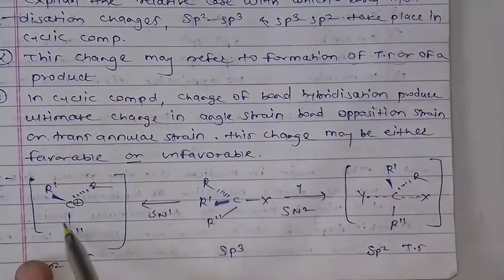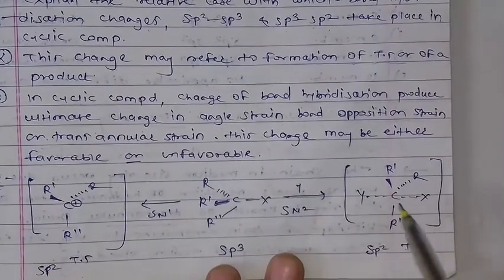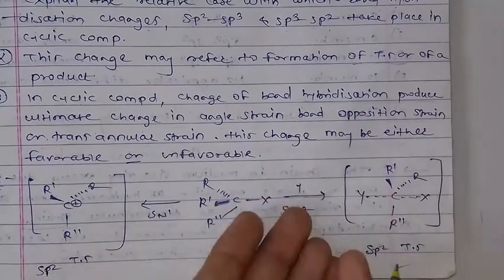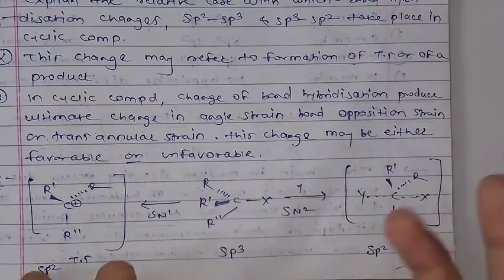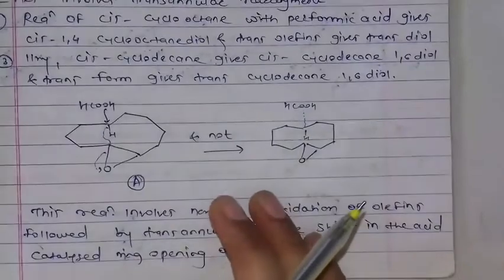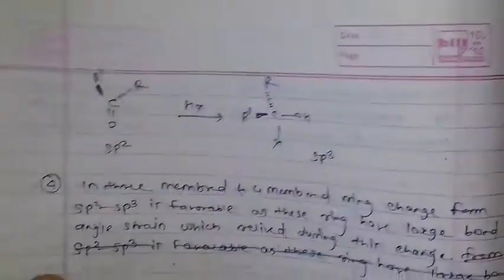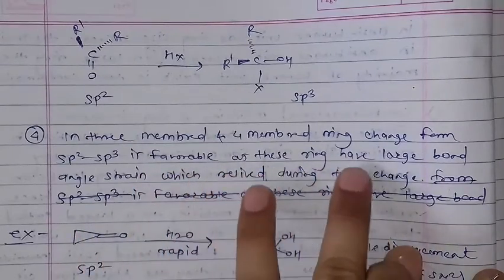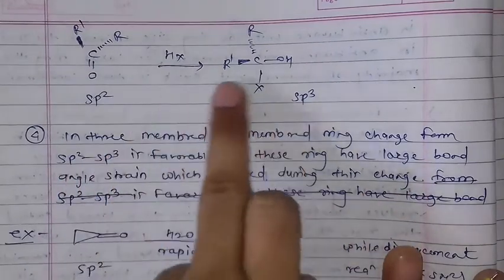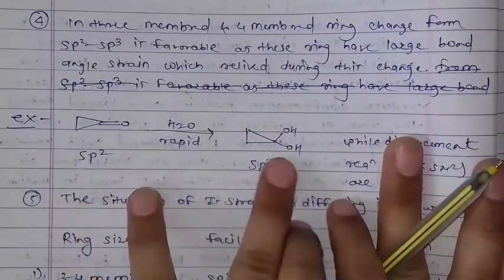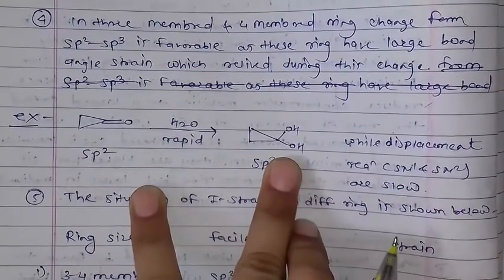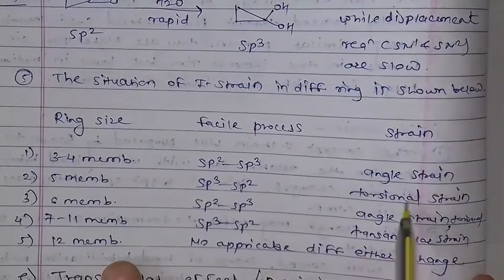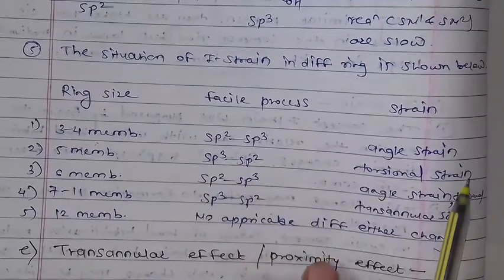The reaction involves sp3 to transition treatment and simple addition-type transition. The condition can be favorable or unfavorable. For 3- and 4-member rings, remember the change: each ring has large bond angle strain. The 3-member ring size delays sp2 strain — that is, angle strain. Next point: transannular effect.